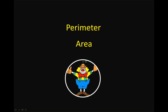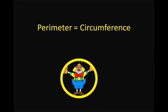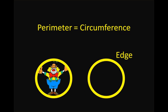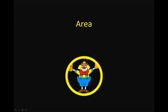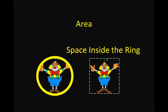Today we're going to look at perimeter and area. Remember we did the perimeter of a rectangle in our previous video. In the case of circles, the perimeter is called the circumference. The circumference is the edge of the circle, represented here by the thick yellow line — you can think of that as the ring, the outer edge of the shape. The area is defined as the space inside the edge or the ring, represented by our clown photo that we colored in.